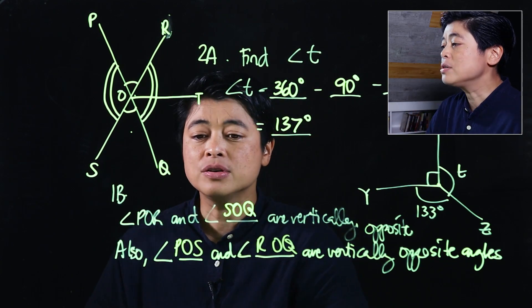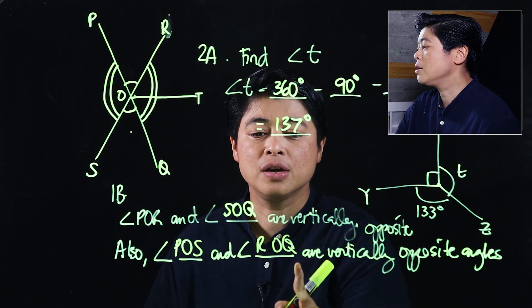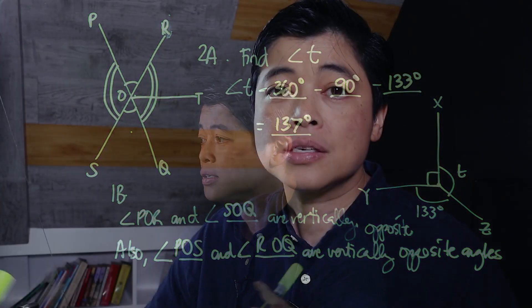But again, those can be called SOP and QOR, so whatever the kids are comfortable with. We can't force them to name the way that we want. We just need to remember that every angle can be named differently.